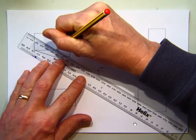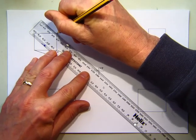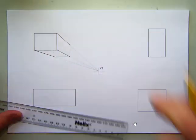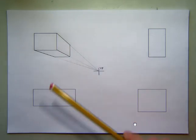So what I now have is my cube, and if I just darken in the sides of it, the parts of the lines, there is my first one-point perspective cube. So what we're going to do is we're going to record each of the other ones.